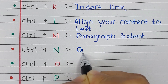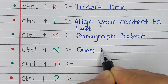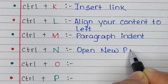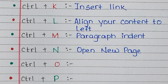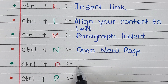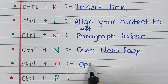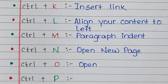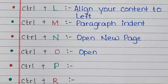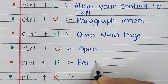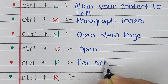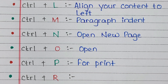Next one is Ctrl N. Ctrl N is the shortcut for open new page. Next one is Ctrl O. Ctrl O is the shortcut for open. Next one is Ctrl P. Ctrl P is the shortcut for print.